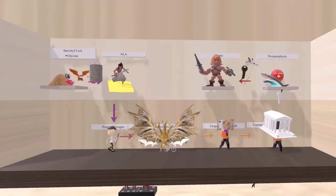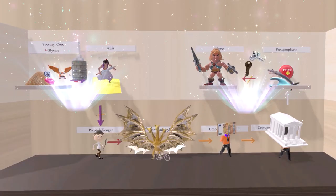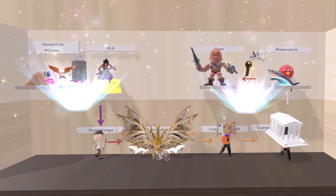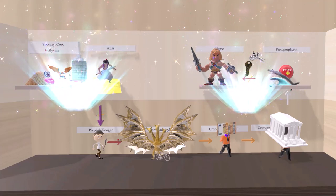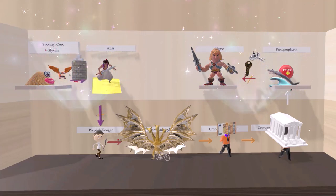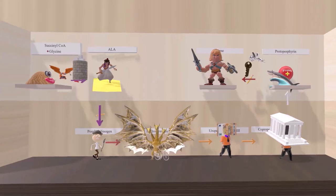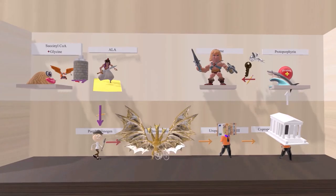You may have noticed the factory has two floors. Everything occurring on the second floor happens in the mitochondria, and everything on the first floor occurs in the cytoplasm. That's it for heme synthesis — hope you enjoyed!